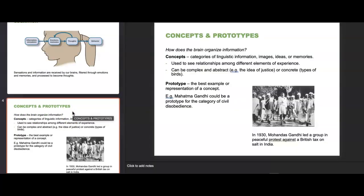It's important to talk about how our brain organizes all of this — how we keep emotions, memories, and thoughts clear. We first start with concepts: categories of linguistic information, images, ideas, or memories used to see relationships among different elements of experience. They can be complex and abstract, like the idea of justice and morality, or they can be concrete, like types of birds or types of fruits.